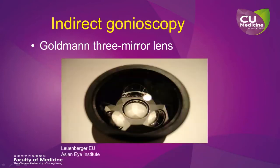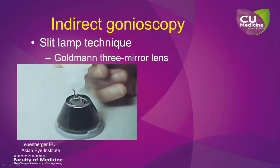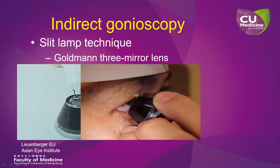For indirect gonioscopy, one example of the lens used is the Goldman 3-mirror lens. In indirect gonioscopy, the image is viewed through a mirror. To perform indirect gonioscopy, the patient has to sit very comfortably at the slit lamp with the eye leveled at the black marker line. A coupling agent in the form of methylcellulose gel has to be placed on the concave surface of the lens. The patient is then asked to look up, we invert the lower eyelid, and the lens touches the eye with the inferior border of the concave surface. The lens is then rolled forward while the patient looks straight ahead, and the cornea comes into contact with the concave surface of the lens.